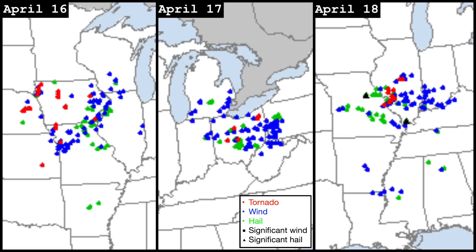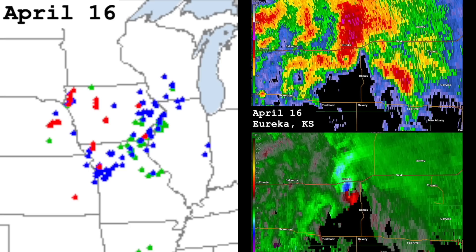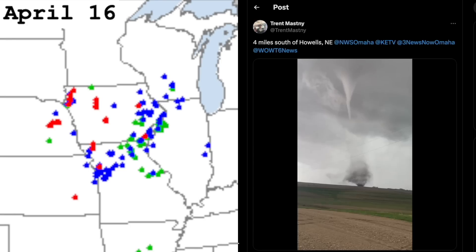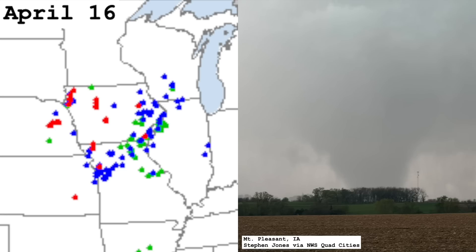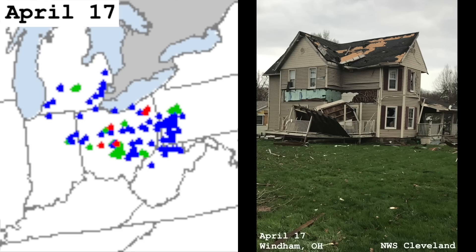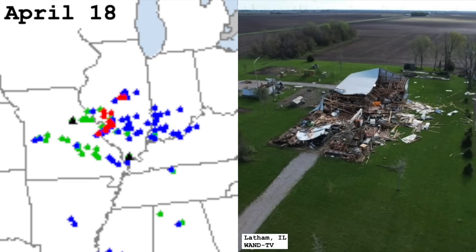As we moved into the latter half of April, we saw another multi-day outbreak with 48 tornado reports during the three-day stretch from April 16th through 18th. After multiple tornadoes on the morning of the 16th across eastern Kansas, tornadic supercells developed both near the surface low in eastern Nebraska and south of the warm front in Iowa and Missouri, the latter regime spawning a high-end EF2 in far southeast Iowa. A few tornadoes would occur in Ohio on the 17th and in the general vicinity of St. Louis on the 18th.